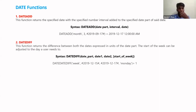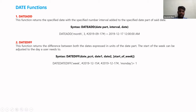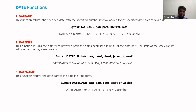The next function is DATEDIFF. We have already used this function — Jagdish gave a table calculation last week where we used DATEDIFF to calculate the difference in dates between order date and ship date. The DATEDIFF function is used to calculate the number of days, months, or years between two date fields. The syntax is: DATEDIFF(date_part, date1, date2).